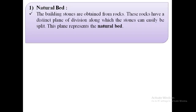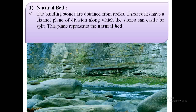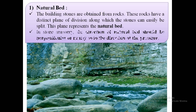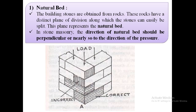The first term is natural bed. The building stones are obtained from rocks. These rocks have a distinct plane of division along which the stones can easily be split. This plane represents the natural bed. In stone masonry, the direction of natural bed should be perpendicular, or nearly so, to the direction of the pressure.